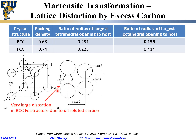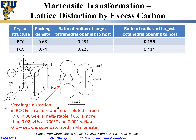This causes a very large lattice distortion. So if you think about the solubility of carbon in BCC iron — is it high or low? It's low, because the carbon has to push everything around so much. In reality, at 700°C, BCC iron can only handle 0.02 weight percent carbon — not a high number.